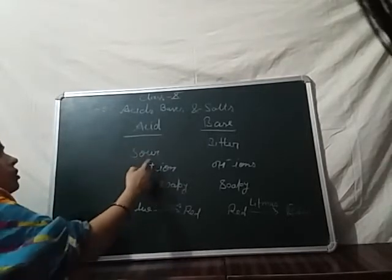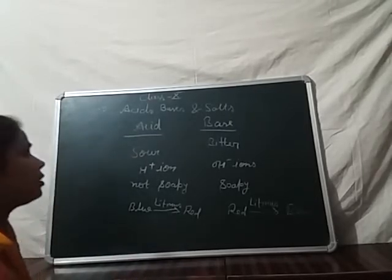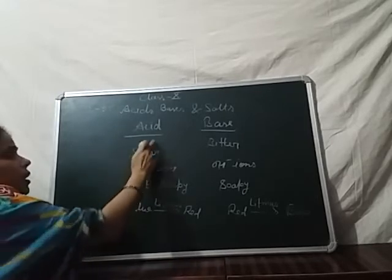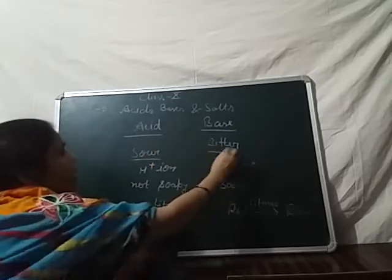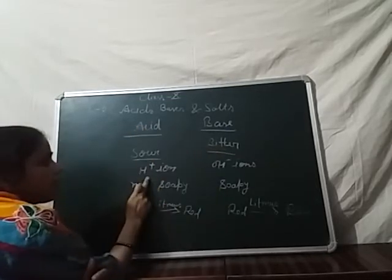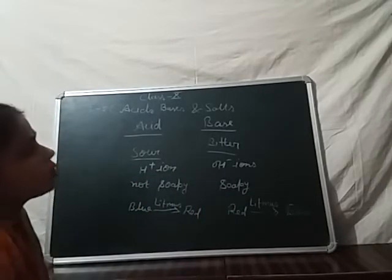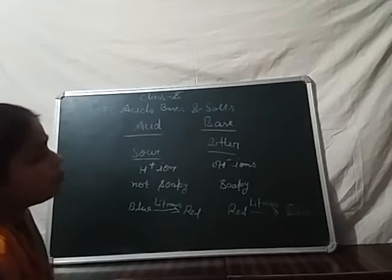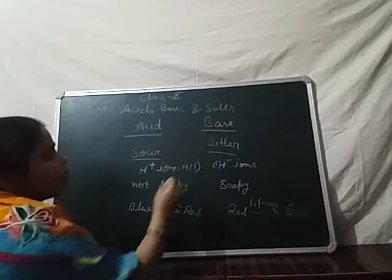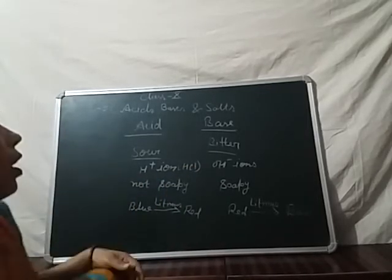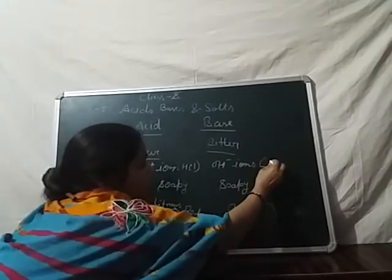Acids are generally sour in taste and bases are bitter in taste. In the property of testing: acids are sour in taste and bases are bitter in taste. Acids release hydrogen ions in an aqueous solution. Bases release hydroxyl (OH) ions when in aqueous solution.